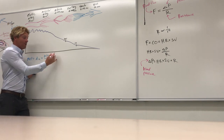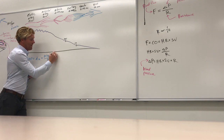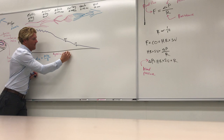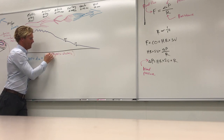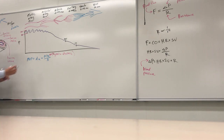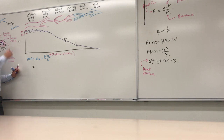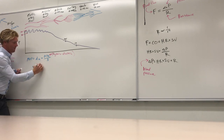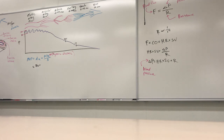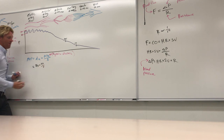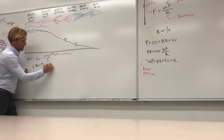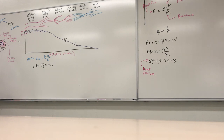For 120/80: pulse pressure = 120 − 80 = 40; 40/3 ≈ 13.3; MAP = 80 + 13.3 ≈ 93.3 mmHg. So MAP is not exactly 100.